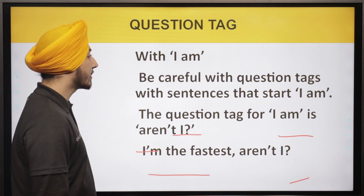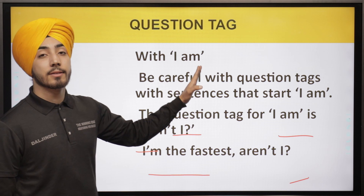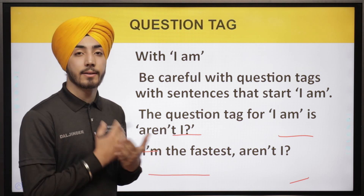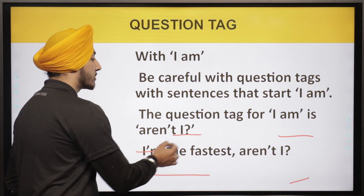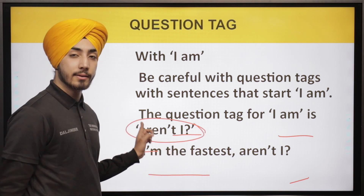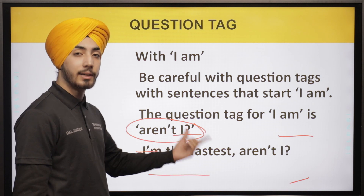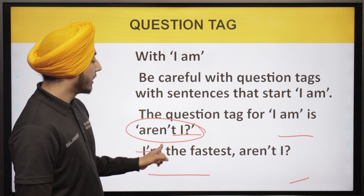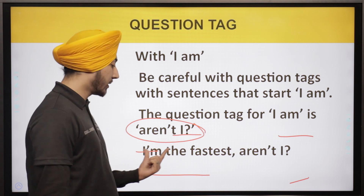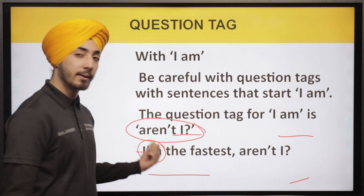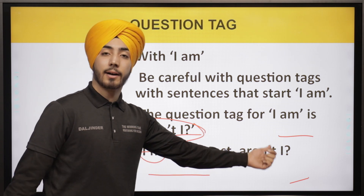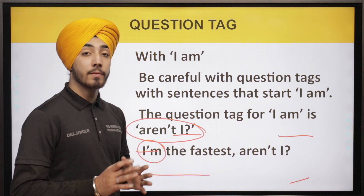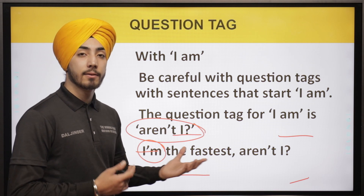The next special case: if a sentence begins with 'I am', the question tag at the end is 'aren't I' — which is 'are not I' contracted. For example: 'I am the fastest, aren't I?' So the question tag for any sentence starting with 'I am' is always 'aren't I?'